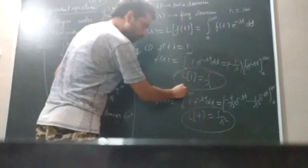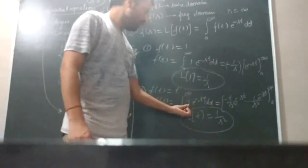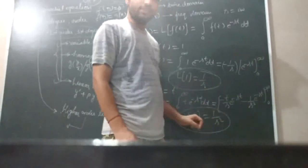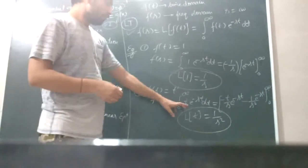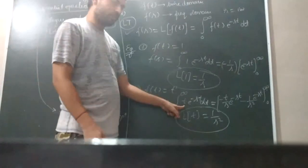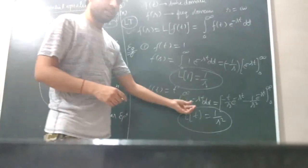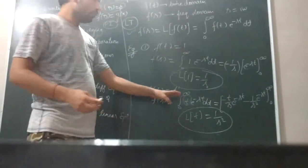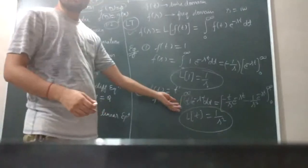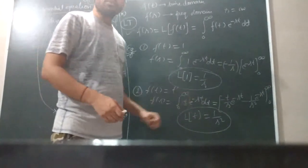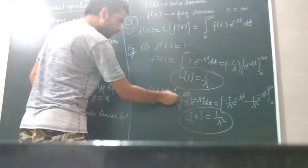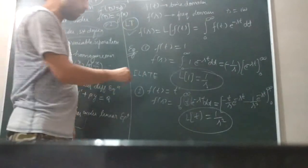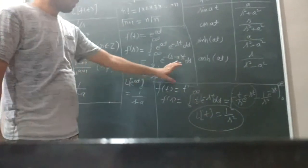Next, if f(t) equals t — that is, t to the power 1 — then we integrate t times e to the power minus st dt from 0 to infinity. We solve this using integration by parts. We use the ILATE rule. Using t as the first function and e to the power minus st as the second function, applying ILATE: the first function has priority 1. Differentiating t gives 1, which cancels, and the integration proceeds.